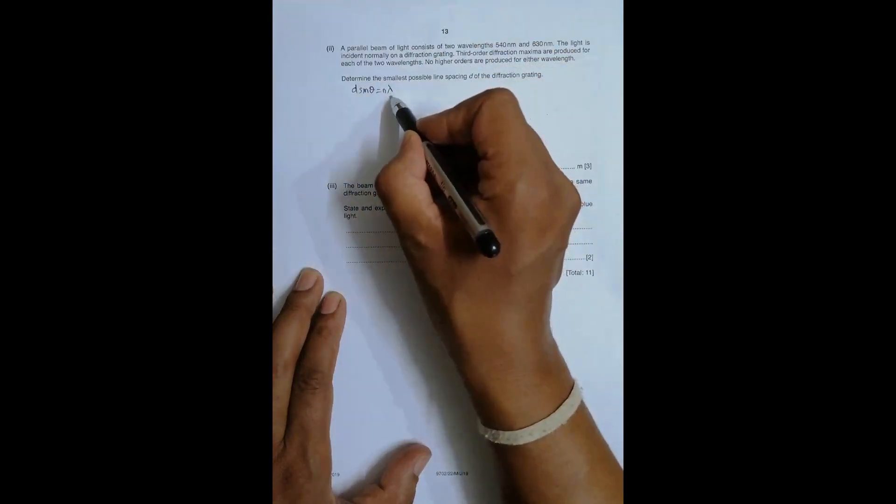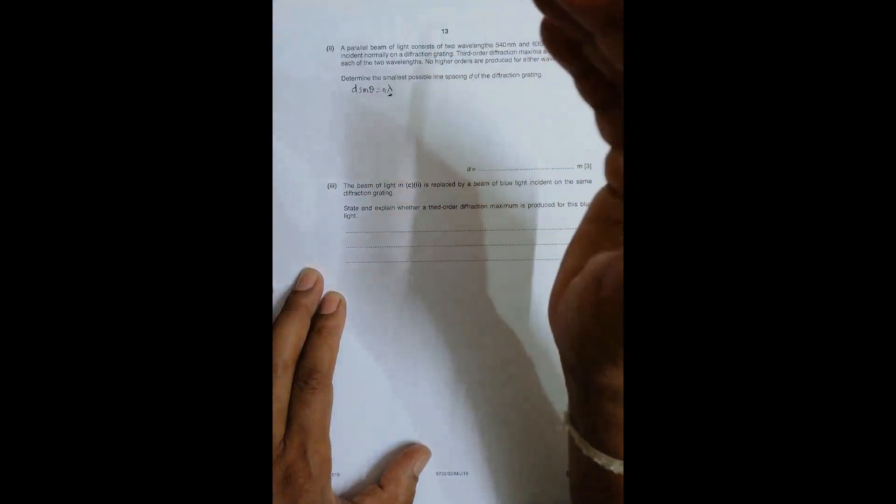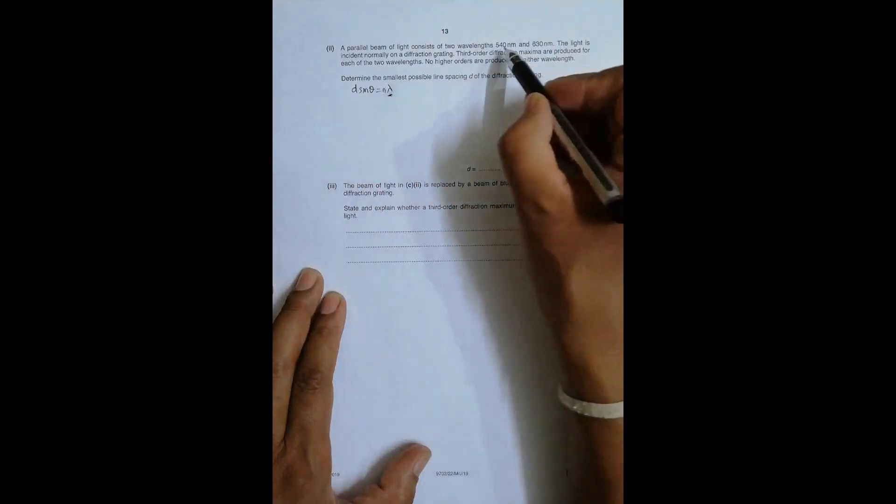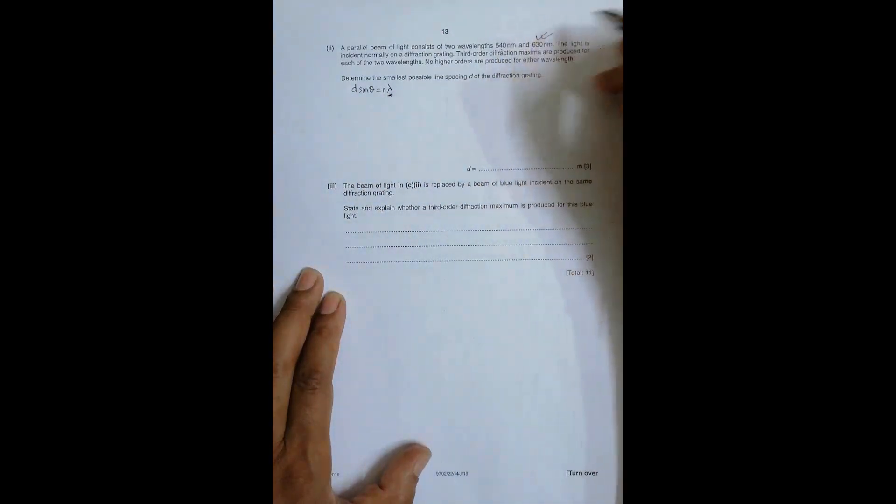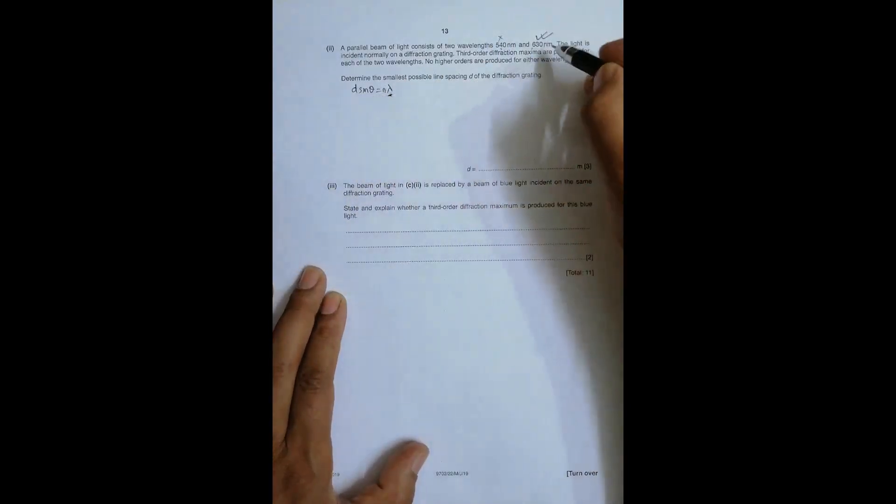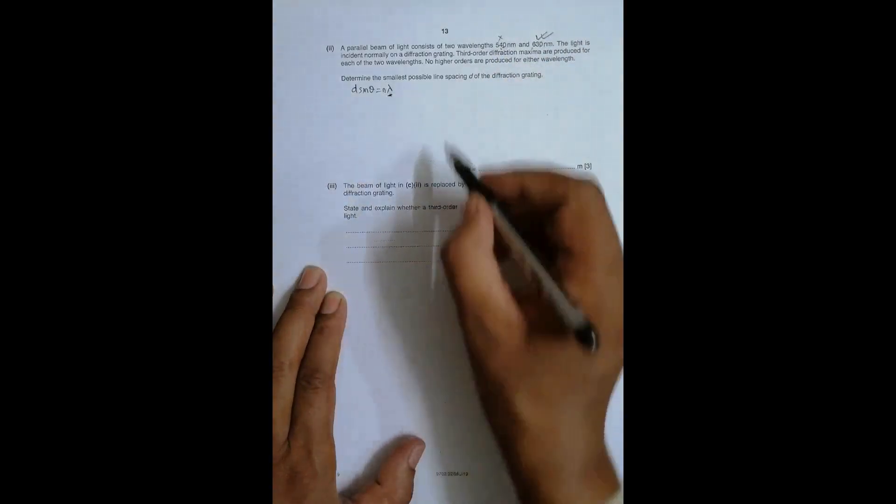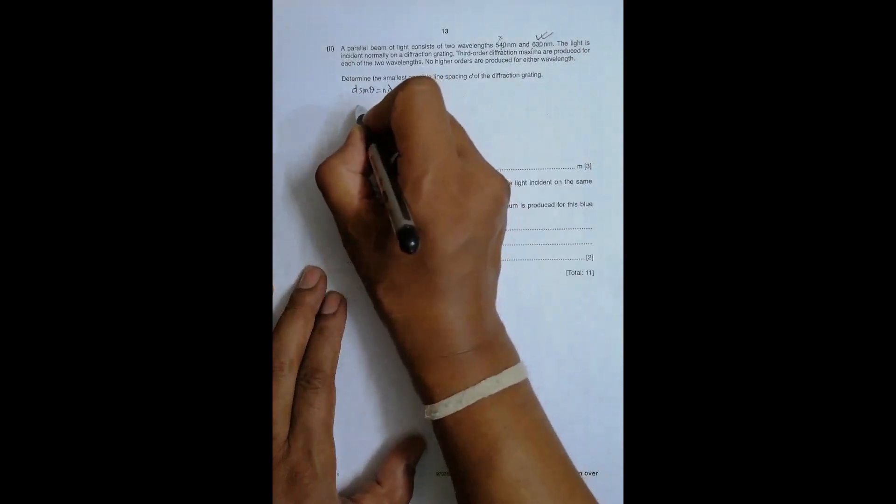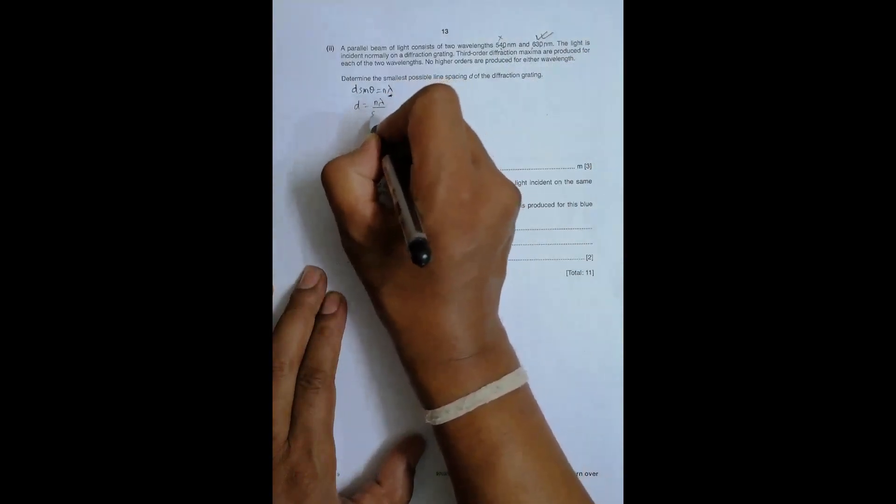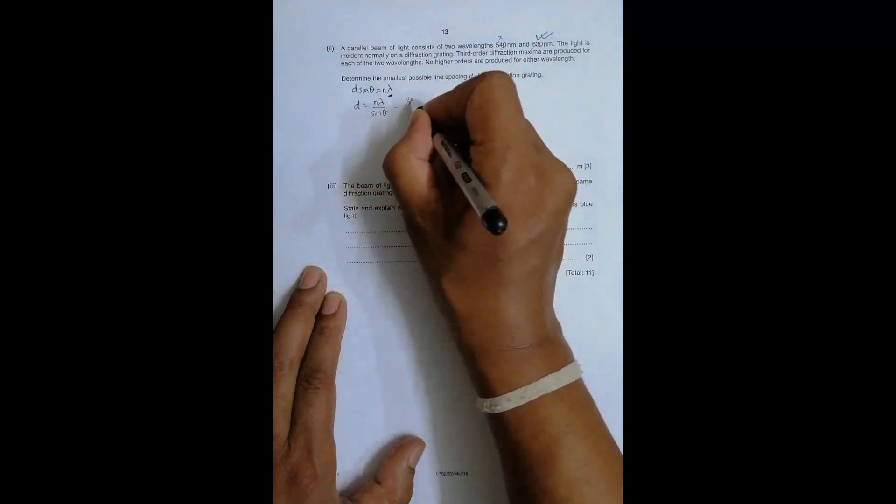So theta will be 90 earlier if lambda is more. So it shall reach 90 degrees, the possibility of reaching that angle is more if lambda is more. So that means among these two wavelengths, only this 630 nm counts in our calculation. The higher wavelength will be reaching theta equals 90 at even lesser order of the waves, so only this one matters.